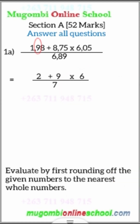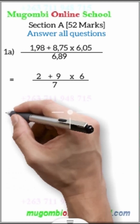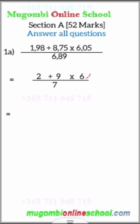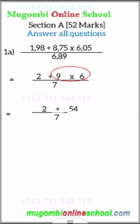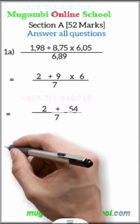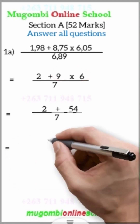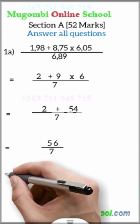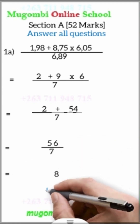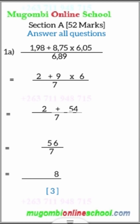If that digit is above 5, you add to the previous. So we calculate 2 plus 9 times 6 over 7. Applying BODMAS, we multiply 9 by 6 first, giving us 2 plus 54 over 7. That gives 56 over 7, and 7 into 56 is 8. That is our final answer, and you get 3 marks — very simple and straightforward.